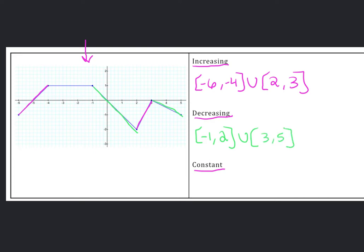And then last one, constant. It is constant right here on the flat spot. So it is constant on the interval negative 4 to negative 1. And that is it for the graph behavior: increasing, decreasing, and constant.